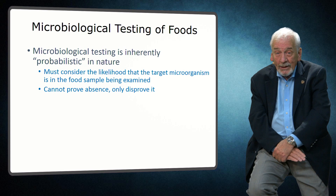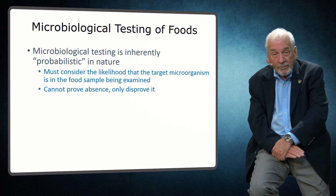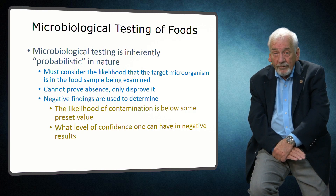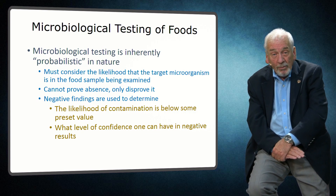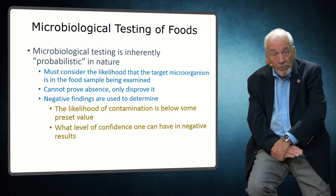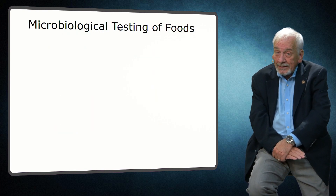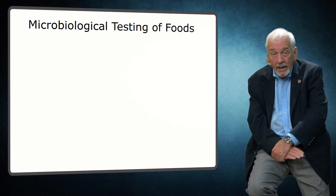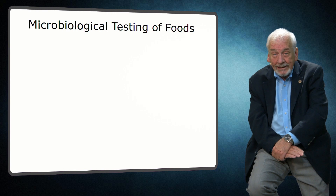Thus, if one is testing only a portion of a food lot, one cannot absolutely prove the absence of a pathogenic microorganism. However, negative findings are useful. They indicate that the microorganism of concern is present at a level below that which the sampling plan is designed to determine. It also provides a means of estimating the level of confidence that one can have that the target microorganism is truly absent. As previously mentioned, microbiological testing is a set of statistically-based tools.